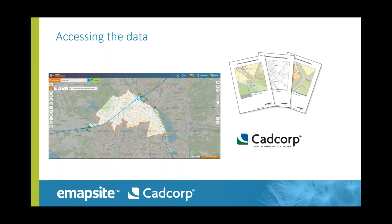There are three ways to access data from us. First, data supplied as a download under licence for use in GIS like CAD Corp — generally under an annual contract with updates included. Second, through our easy self-service map shop where you can select the format you want. Third, if you have no software, we can supply data in spreadsheet format, which is especially good for risk data or ownership data. Development teams can also use our Plans app to get PDF plans for planning applications.